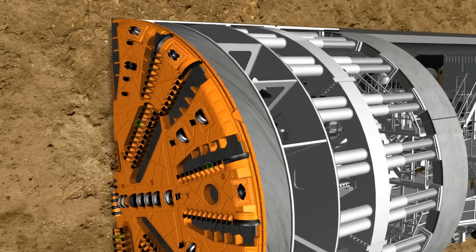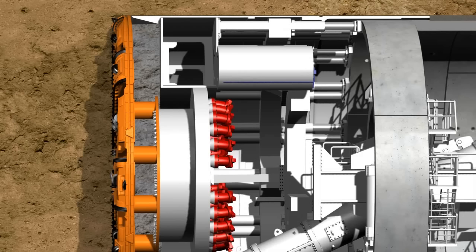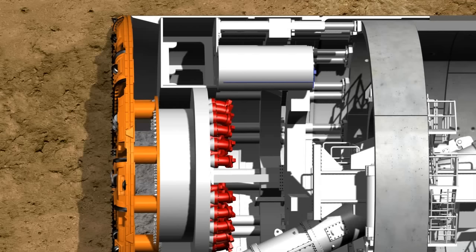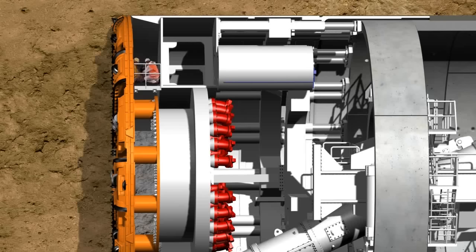If a tool must be replaced, the excavation chamber is partially emptied. At the same time, the cavity in the chamber is supplied with compressed air, if necessary, to stabilize the tunnel face. Then the excavation chamber can be accessed through a manlock to carry out maintenance work or to replace tools.